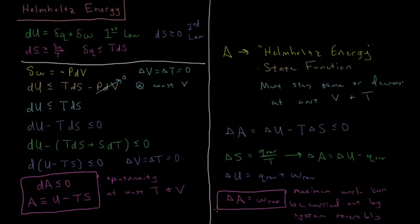If temperature isn't changing, in order to satisfy the second law, the change in Helmholtz energy A equals the maximum amount of work we can extract from the system. If ΔA is negative, the system can do that much work on the surroundings. If ΔA is positive, you have to input that much work into the system in order for that process to occur.